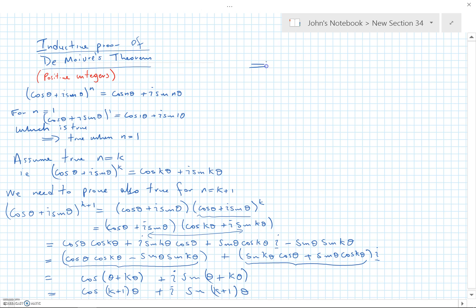So we need to close it off and say that we actually know what's going on and we've proved it. So we say, so that implies true when n equals k plus 1, if true for n equals k. Since, let's just go back to our statement here, also true when n equals 1, De Moivre's theorem is proved for all positive integers.